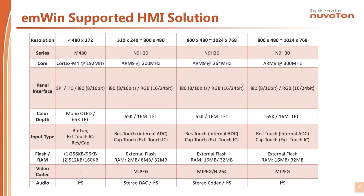The slide shows a summary selection guide table for the Nuvoton HMI solution. Based on the display resolution and the performance requirements of the equipment, an engineer can choose a suitable microcontroller to complete the HMI design. Engineers can follow three steps: first, estimate the memory size including flash and RAM; second, select the LCD or OLED display size, resolution, and interface; third, check the solution guide to find the microcontroller that matches the system requirements.